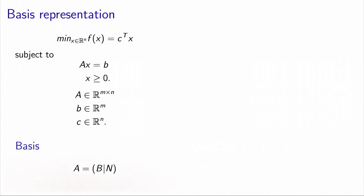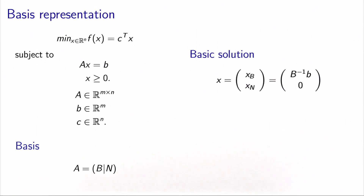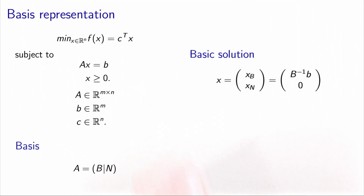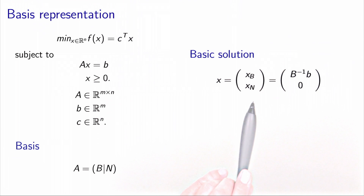Suppose we have decomposed A into a basis matrix and a non-basis matrix, and for simplicity, let's assume the basic variables are the m first variables — you can always do this by renumbering the variables. We know how to calculate a vertex of the polyhedron: it's a basic solution. X is decomposed into basic and non-basic variables; the non-basic variables are set to zero, and the basic variables equal B⁻¹b.